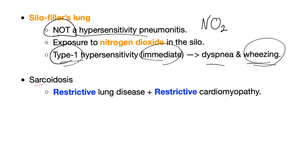Sarcoidosis causes two restrictive diseases: restrictive lung disease and restrictive cardiomyopathy — the lungs are restricted from filling, and the heart is restricted from filling too.